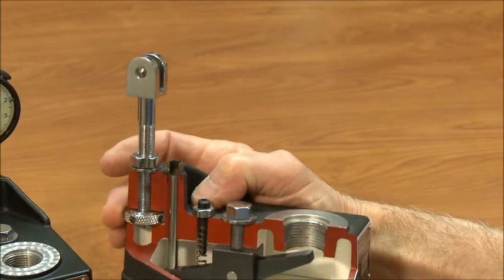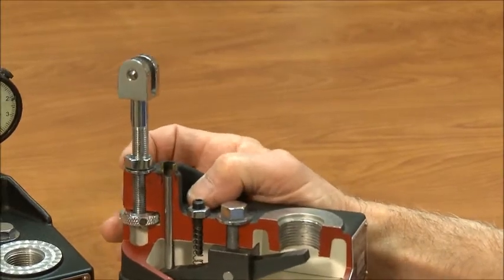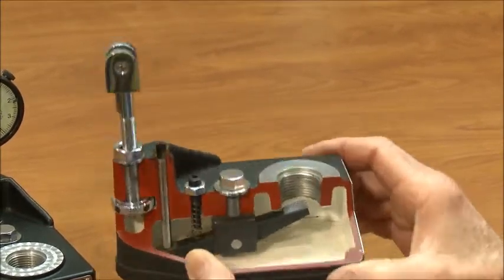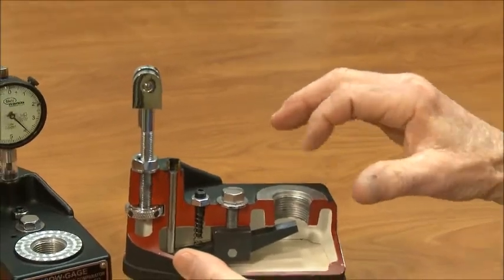The indicator post can be adjusted up and down for setting the gauge to zero, and the special tooling threads in this part of the Dow gauge.